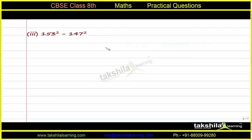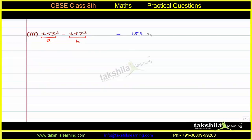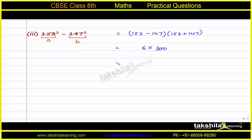In the third part, we find 153 squared minus 147 squared. Taking 153 as a and 147 as b, and using a² minus b² equals a minus b into a plus b, this becomes 153 minus 147 into 153 plus 147, which is 6 into 300, equal to 1800.